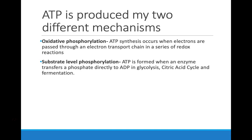ATP is produced by two different mechanisms in cellular respiration. The first is oxidative phosphorylation, where you get the bulk of your ATP production. During oxidative phosphorylation, electrons are passed through a series of molecules called an electron transport chain in a series of oxidation-reduction reactions, all the way down until all of the energy is taken out and used to produce ATP. That's the main bulk energy production during cellular respiration.